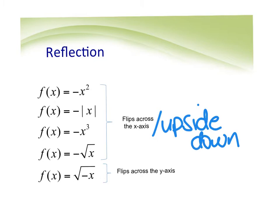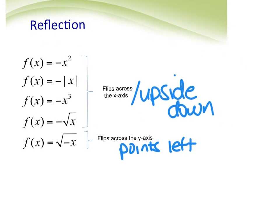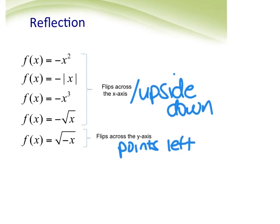If the negative is inside the function, it flips it across the y-axis. For a square root, instead of pointing to the right it's going to point to the left. For most functions this doesn't visually matter — flipping a V looks the same left to right, flipping a U looks the same. The ones it impacts are the cubic, reciprocal, and square root functions.